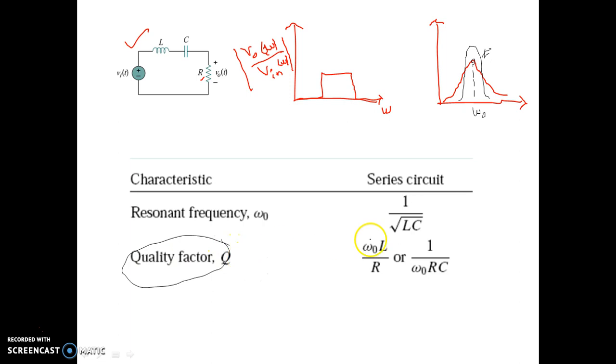The expression for series RLC resonant circuit quality factor is omega naught L by R, or 1 by omega naught RC. You can write this as another formula also. Omega naught L by R is Q, and what is omega naught? Omega naught is 1 by root over of LC.